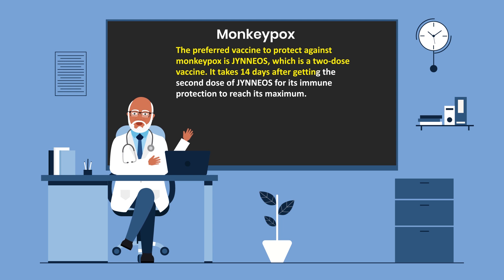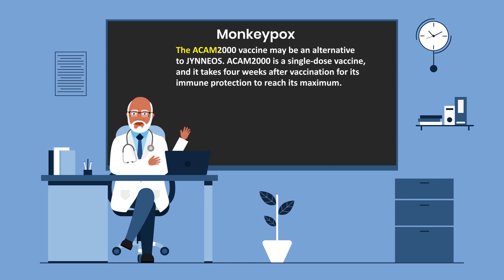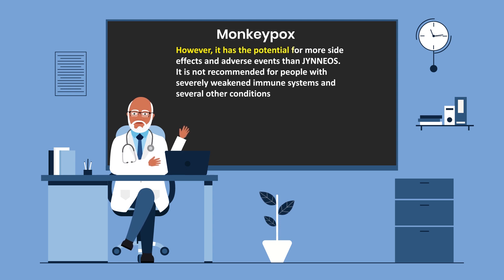It takes 14 days after getting the second dose of JYNNEOS for full protection. The ACAM2000 vaccine may be an alternative to JYNNEOS. ACAM2000 is a single-dose vaccine and it takes four weeks after vaccination for immune protection to reach its maximum. However, it has the potential for more side effects and adverse events than JYNNEOS, and it is not recommended for people with severely weakened immune systems and several other conditions.